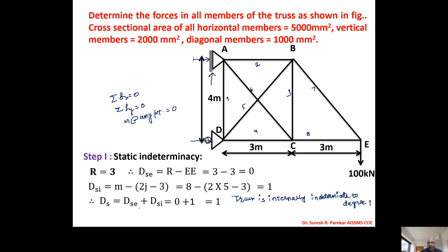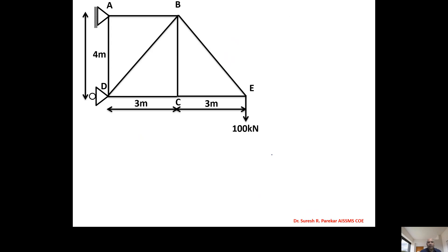Therefore, one member must be considered as redundant, and we will consider member AC as the redundant member. To find the P-forces, we remove the redundant. It may be a reaction or a member — here we remove member AC. We now determine zero-force members. At joint C, members CD and CE are collinear, so the force in the third member is zero.